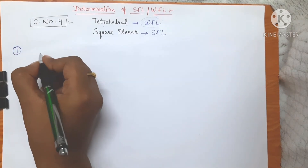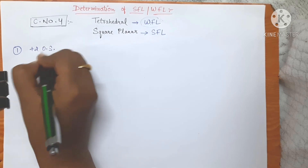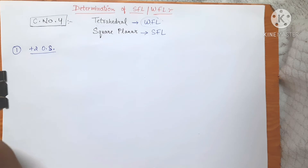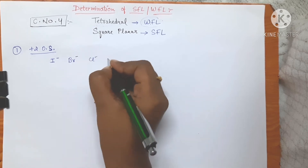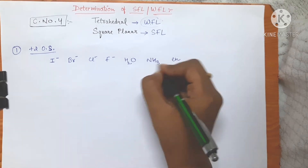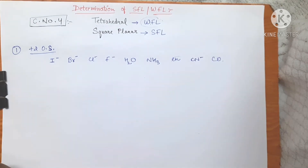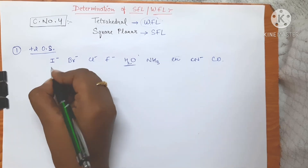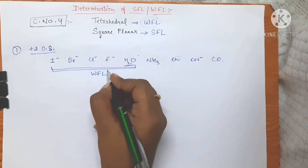First, for coordination number four complexes in which the central ion has a plus two oxidation state — if we roughly write down the spectrochemical series, it goes: halides, then oxygen donors, then nitrogen donors. Up to oxygen donors, that is up to water, all the ligands are going to behave as weak field ligands, meaning the complex is going to have tetrahedral geometry.